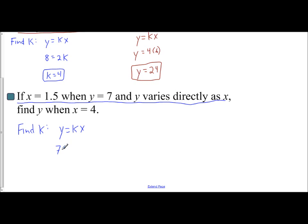You're told direct variation, which gives you the formula y equals kx. You know y is 7 and x is 1.5. You're trying to find k. So I would divide both sides by 1.5, and you're going to get 14 thirds. So that is your constant of variation.